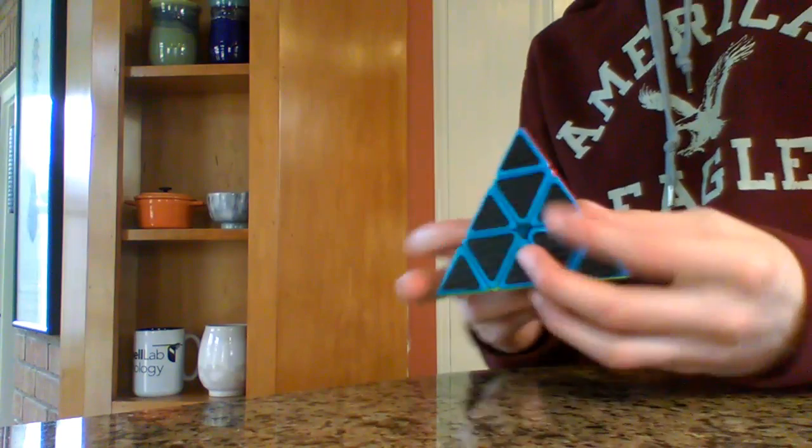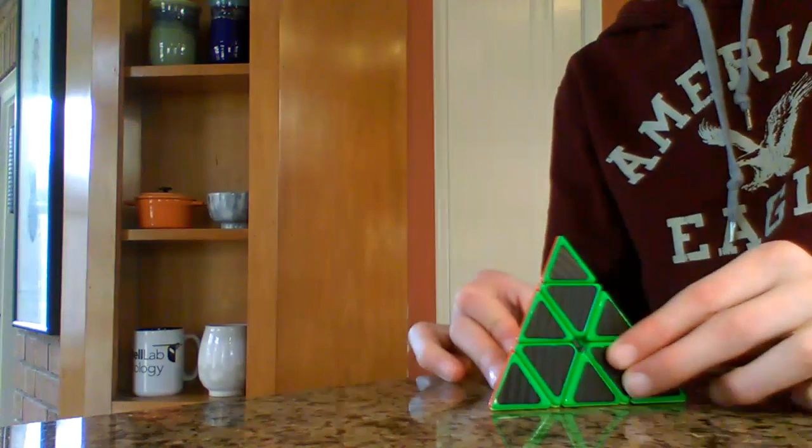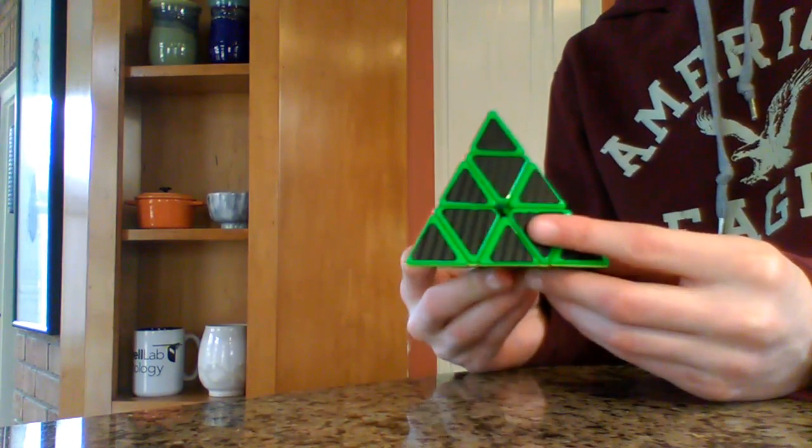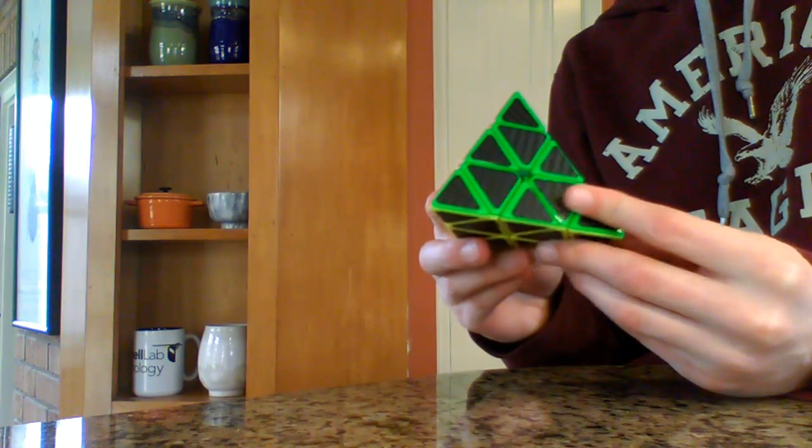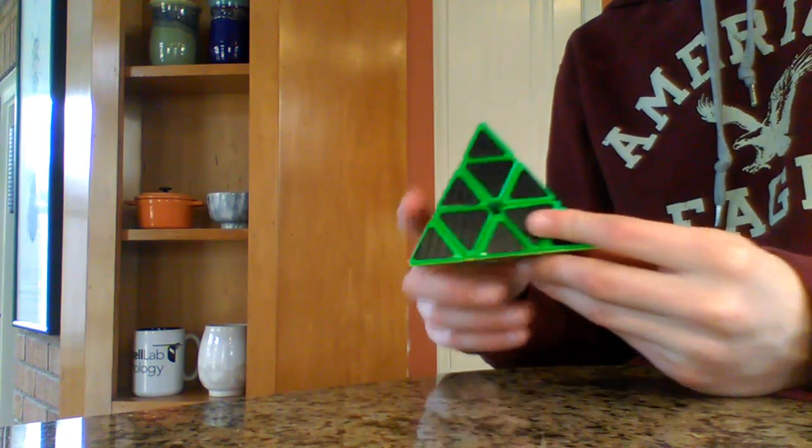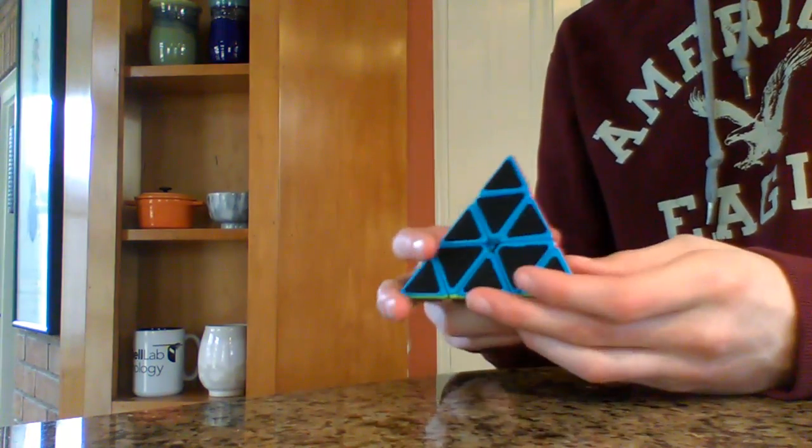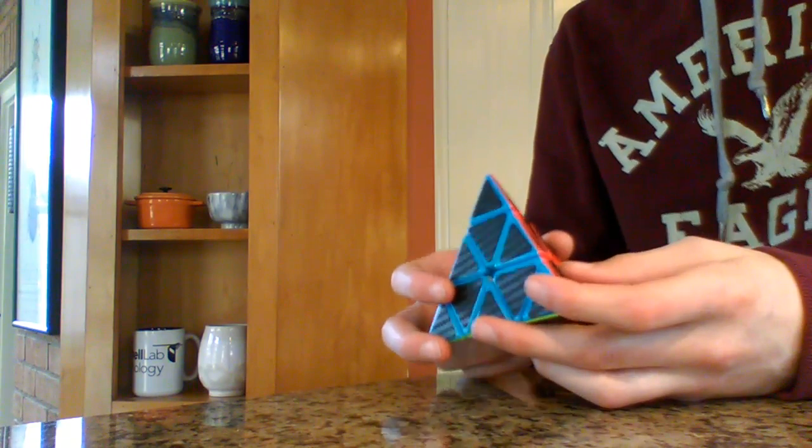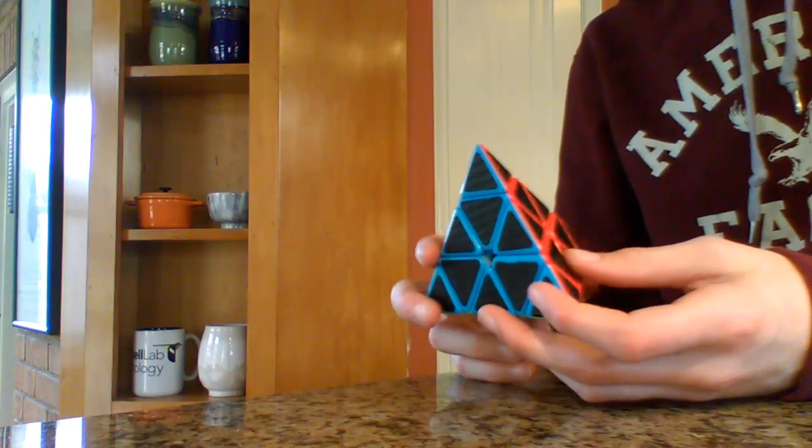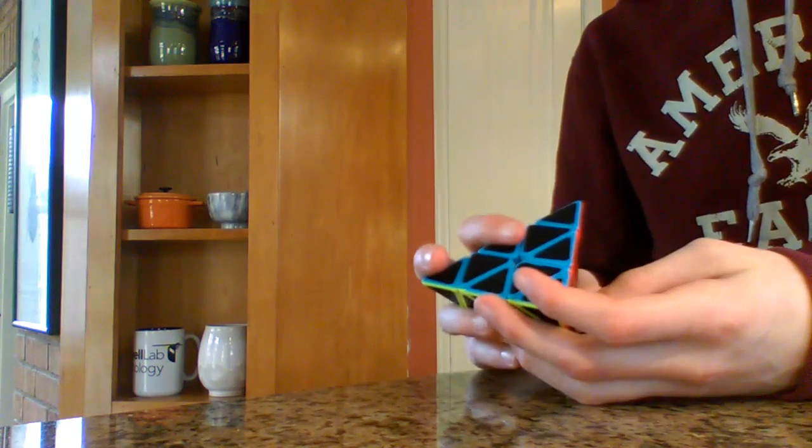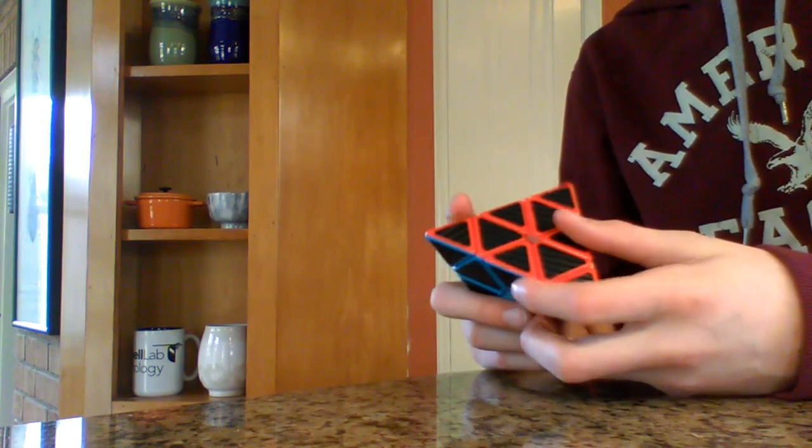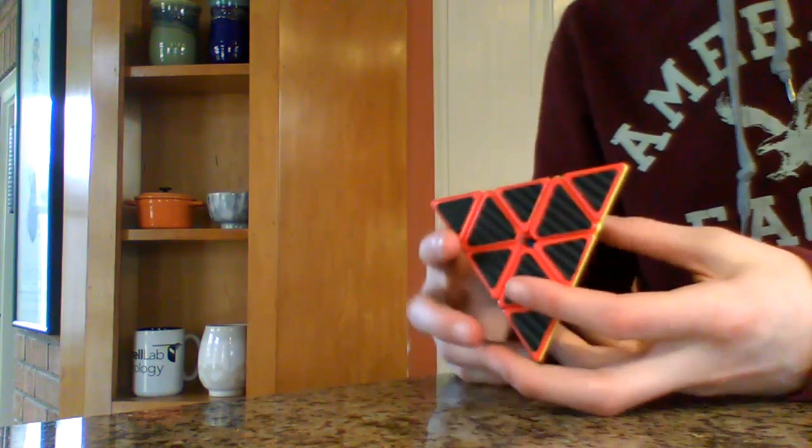That's all you need to do to get a fully solved Pyraminx. You just need to memorize that one algorithm at the end: left down, right down, left up, right up, then left up, right up, left down, right down.